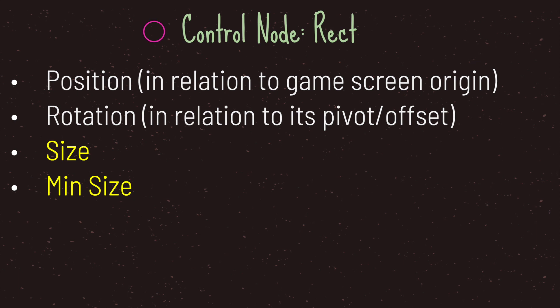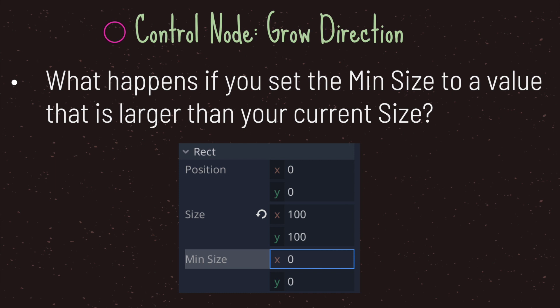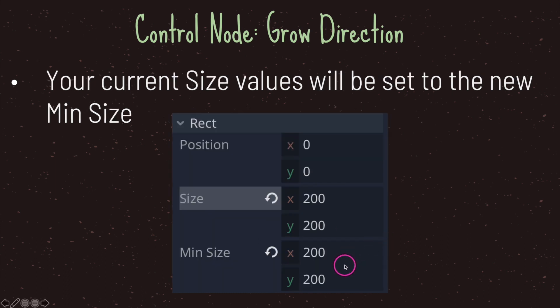Rotation is in relation to its pivot offset and not the anchor. Size is of course the size we would like our control node to be — for a button, we can control its width and height. Minimum size tells our control node that it can change its width and height, but cannot go below a minimum threshold — by default minimum size is set to zero. If you set minimum size to a value larger than your current size, it will simply change the size value to match.